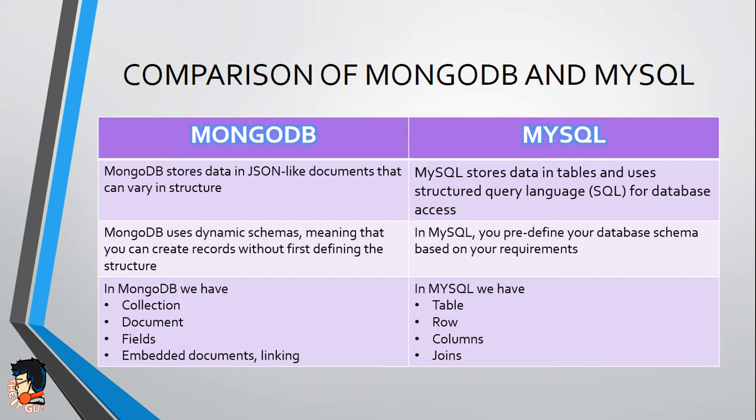Let's take an example. If I have to prepare a database for customer details, in MySQL you have to first design the schema — the columns you are going to have — so let's say it has name, age, phone number, and address as columns in a table. You have to pre-define it, but in MongoDB that's not the case. At any point in time you can add a field or remove a field for any entry.